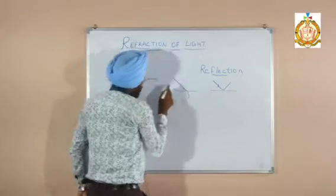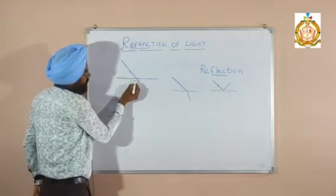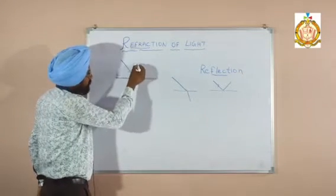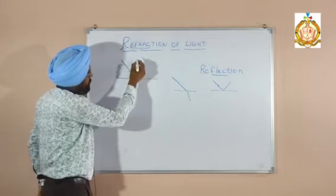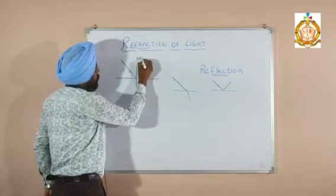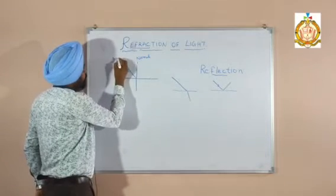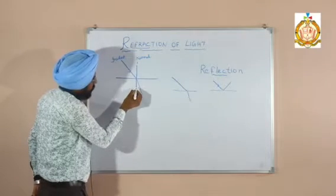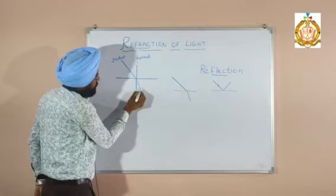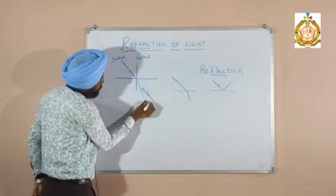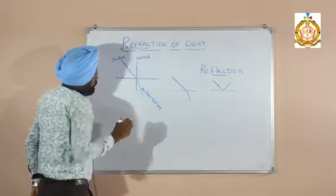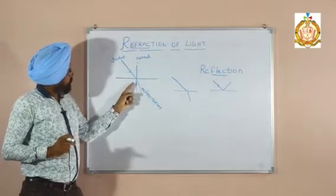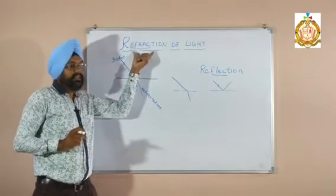This ray comes and strikes on the medium — that is the incident ray. We draw a normal ray here to measure angles. This is the normal ray, and this is the incident ray. The ray which passes and bends toward the normal is called the refracted ray. So, what is refraction? When the incident ray comes and passes to another medium and bends toward the normal, that is called refraction.